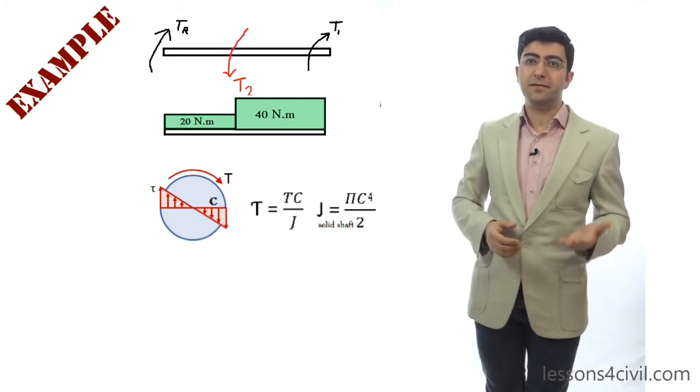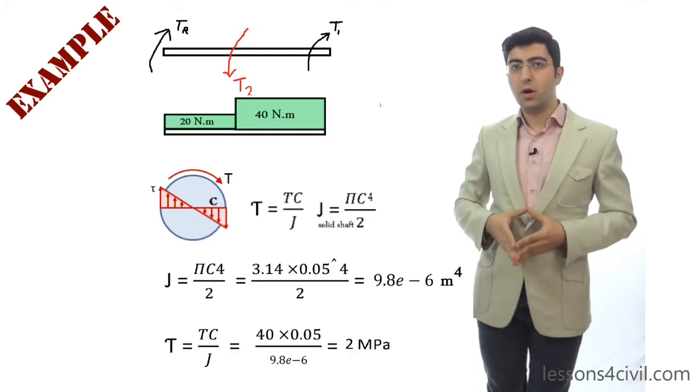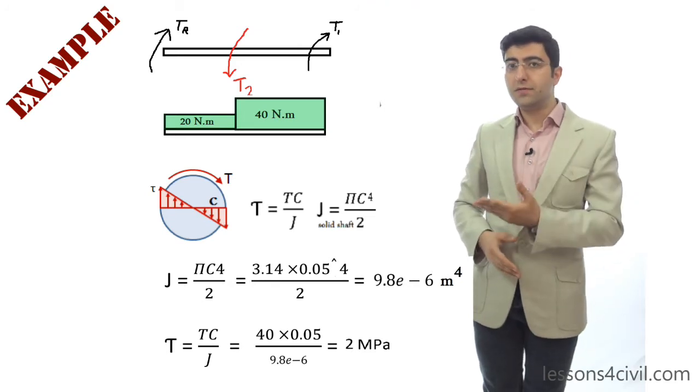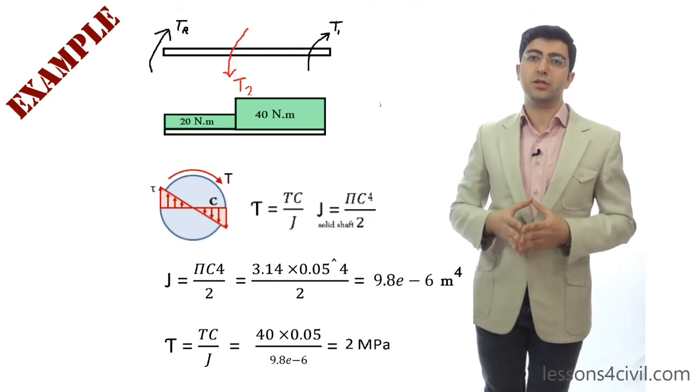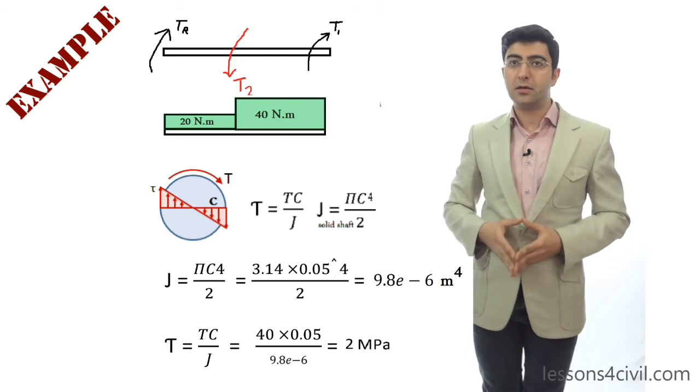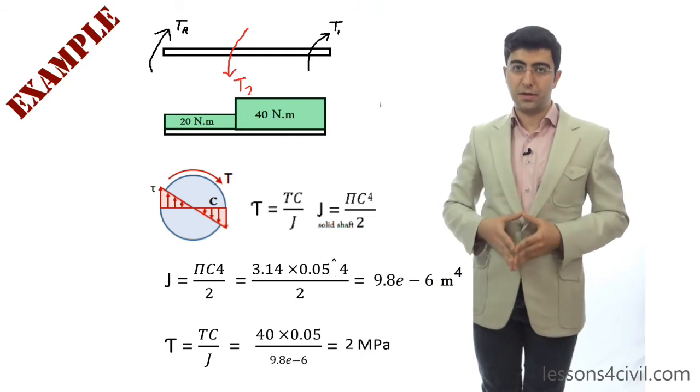The polar moment of inertia for a solid shaft is pi C to the fourth over 2, which is equal to 1 millionium. So according to this formula, the maximum torsional stress is about 2 MPa, and it happens in the outer boundary of the circle.